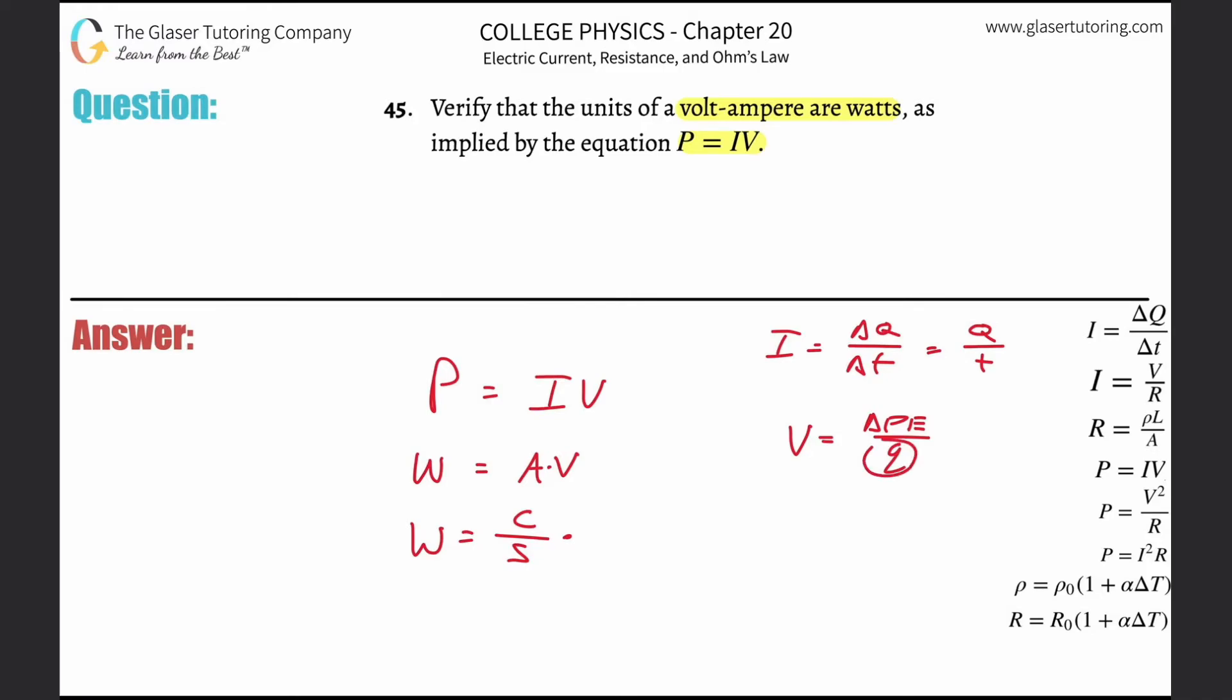The difference between capital and lowercase doesn't really matter. They have the same units. So the top unit here is energy, a joule, the bottom is charge, a coulomb. It's basically joules per coulomb. So for the voltage we plug in joules per coulomb.